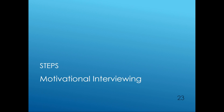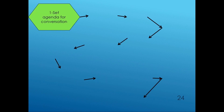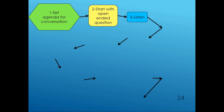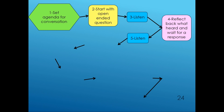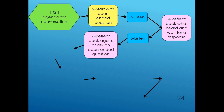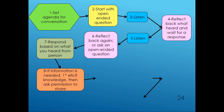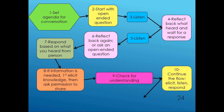Next we will view the detailed steps in motivational interviewing. First, set an agenda for the conversation. Second, start with open-ended questions. Third, listen. Fourth, reflect back what you heard and wait for a response. Fifth, listen. Sixth, reflect back again or ask another open-ended question. Seventh, respond based on what you heard from the person. Eighth, if information is needed, first elicit knowledge, then ask permission to share information as needed. Ninth, check for understanding. Tenth, continue the flow — elicit, listen, and respond as needed. And when you're all done, summarize.